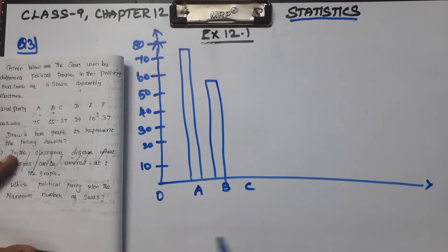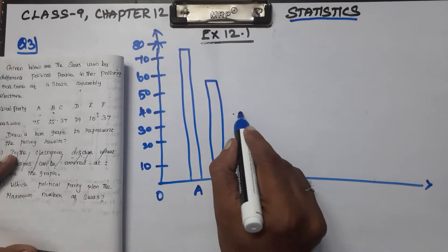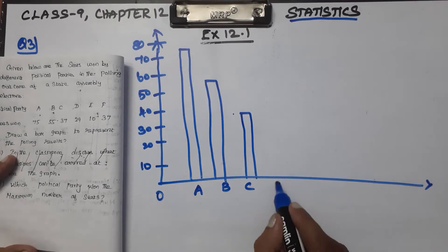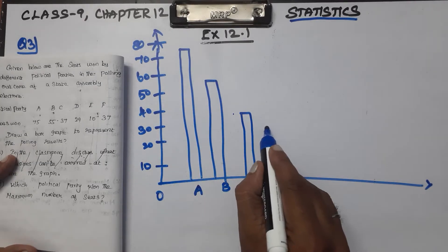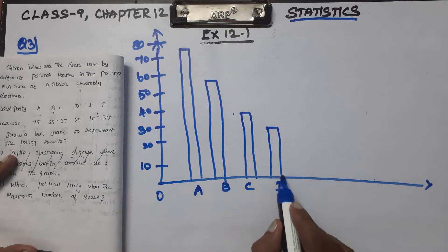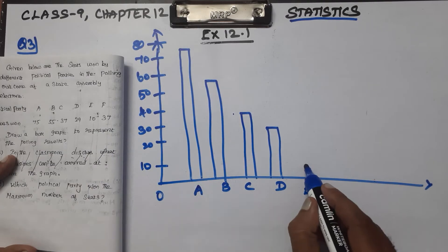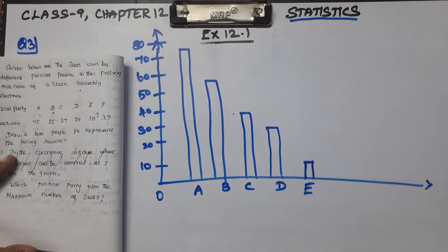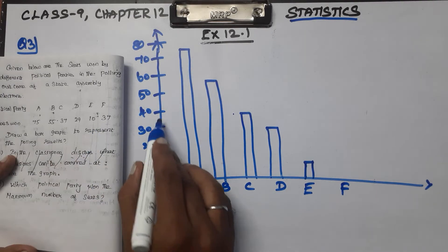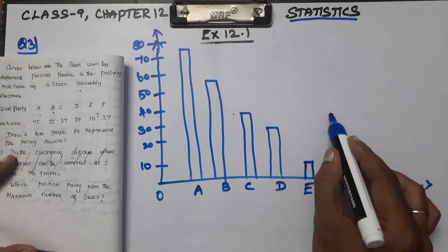Next, party C: 37 seats, draw a bar at 37. Party D: 29 seats — that is just below 30, so approximately 29. Party E: 10 seats, draw a bar at 10. Next, party F: 37 seats, draw a bar at 37.